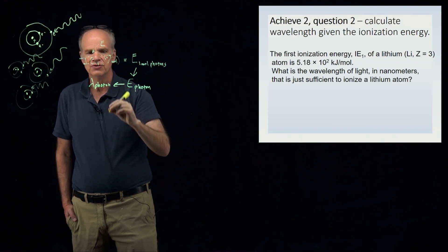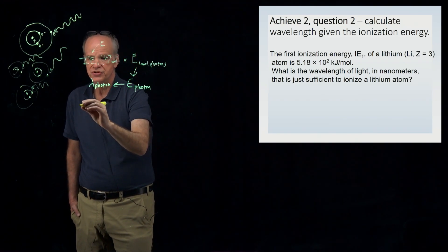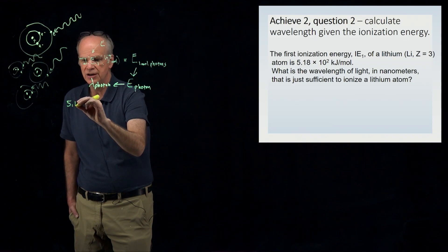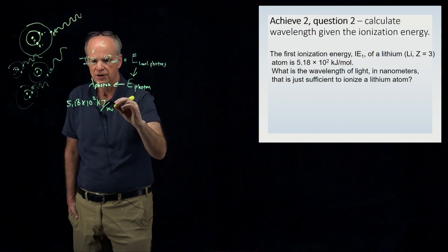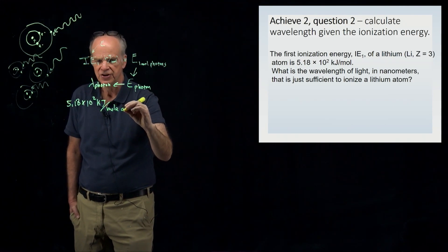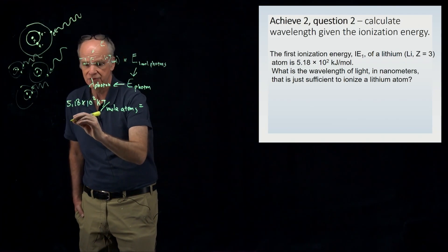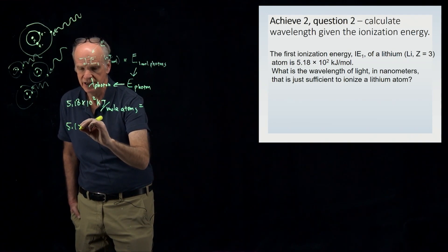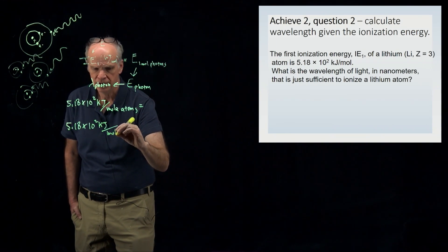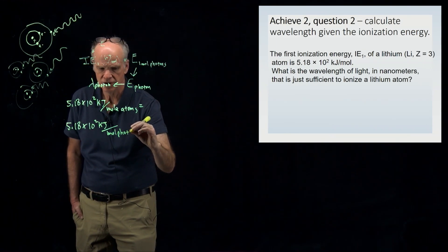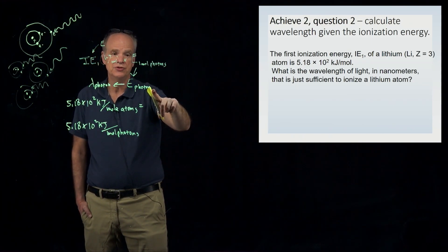Let's take the ionization energy — 5.18 × 10² kilojoules per mole of atoms — and recognize that this equals the energy the mole of photons must have: 5.18 × 10² kilojoules per mole of photons.